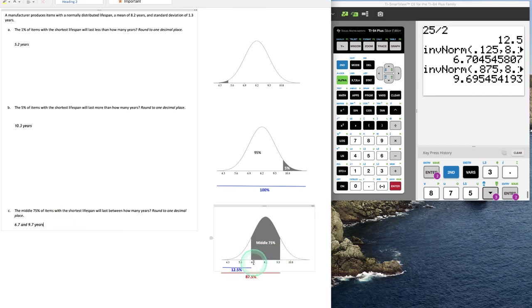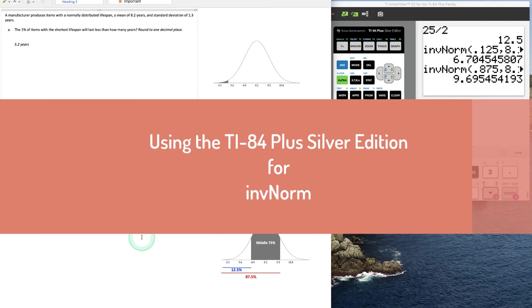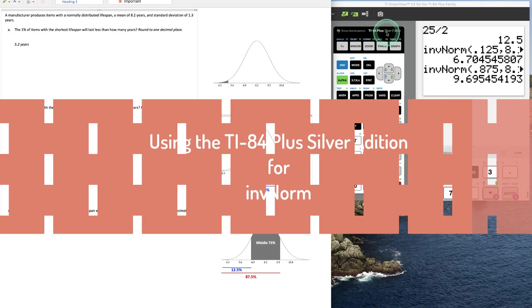These values look correct because 6.7 is a little to the left of 6.9 and 9.7 is a little to the right of 9.5. So this demonstrates how to use the inverse normal distribution function in the TI-84 Plus Silver Edition calculator.